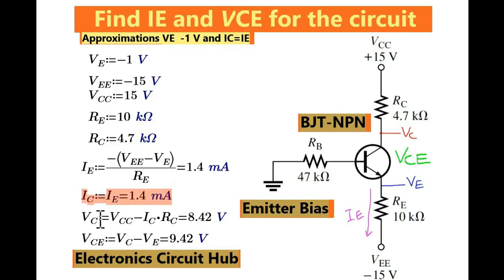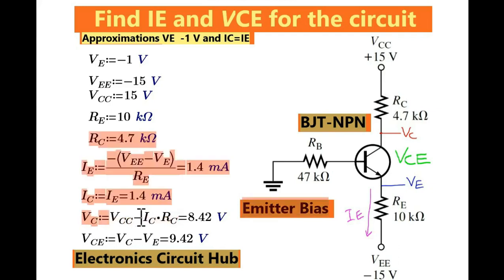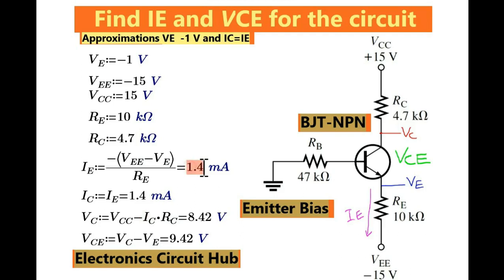Now you can find the value of VC, the voltage at the collector node. VC equals VCC minus IC times RC. So that means 15 volt minus 1.4 milliampere times 4.7 K. If you solve this, you will get VC equals 8.42 volt.